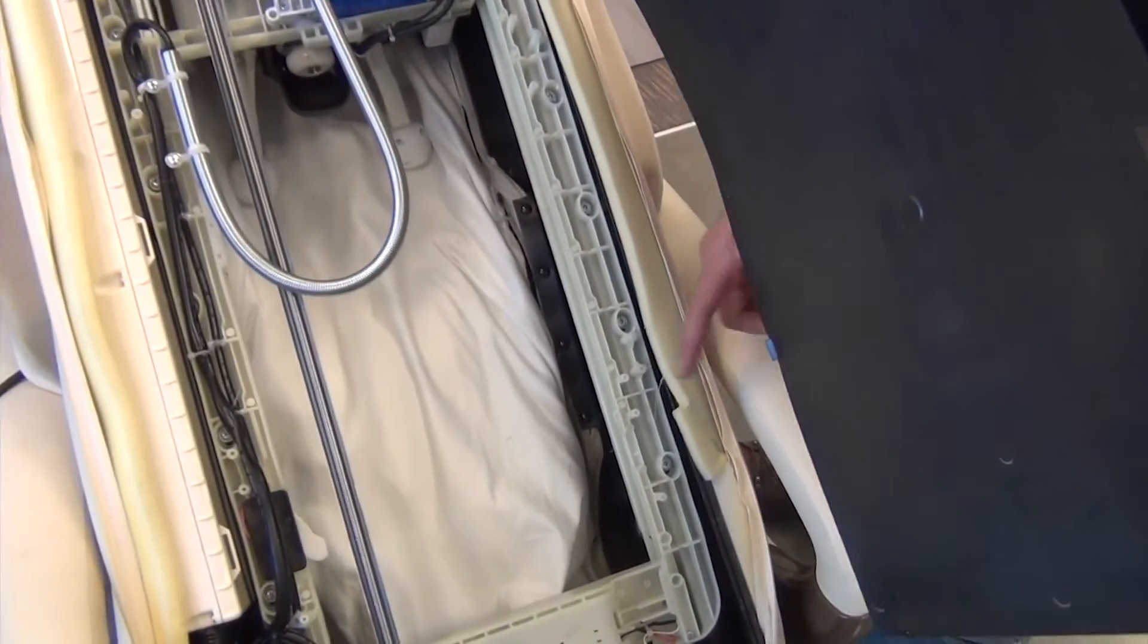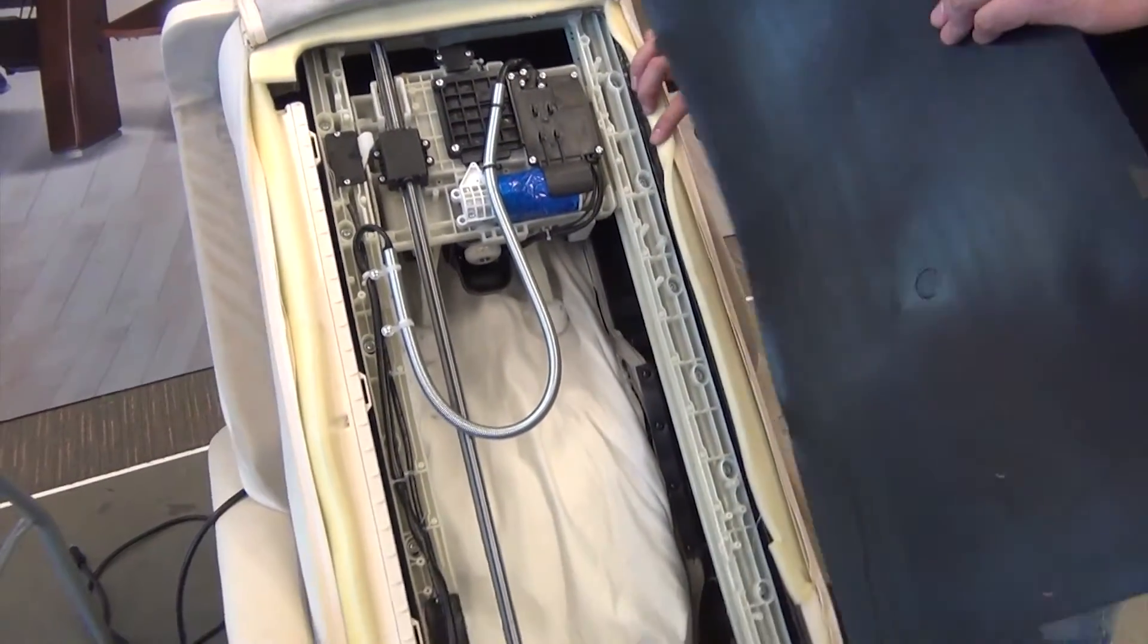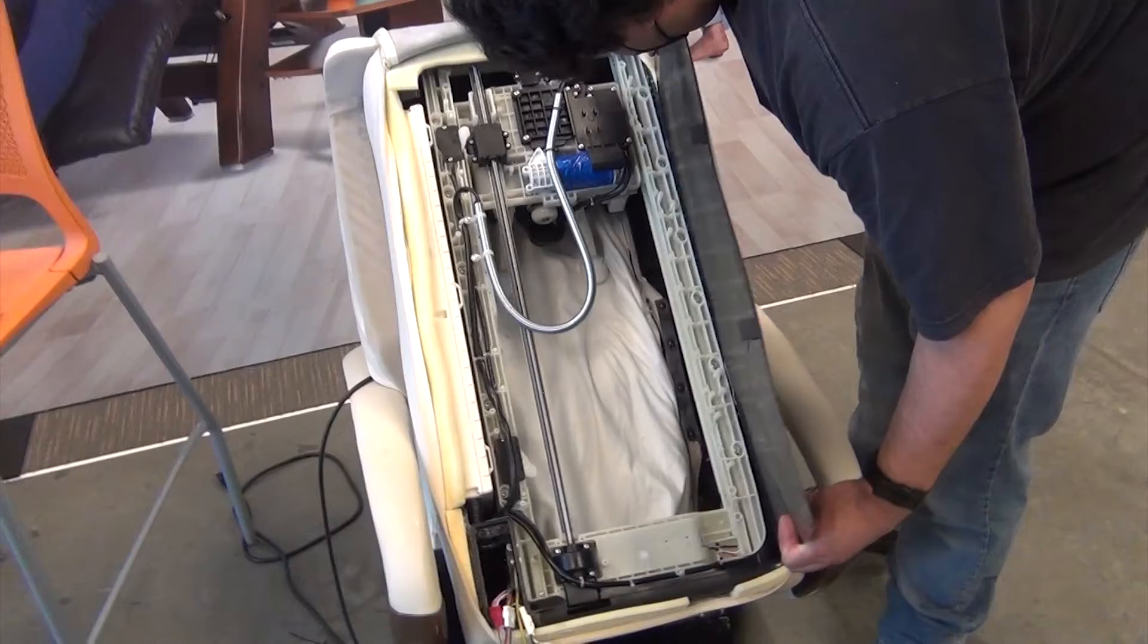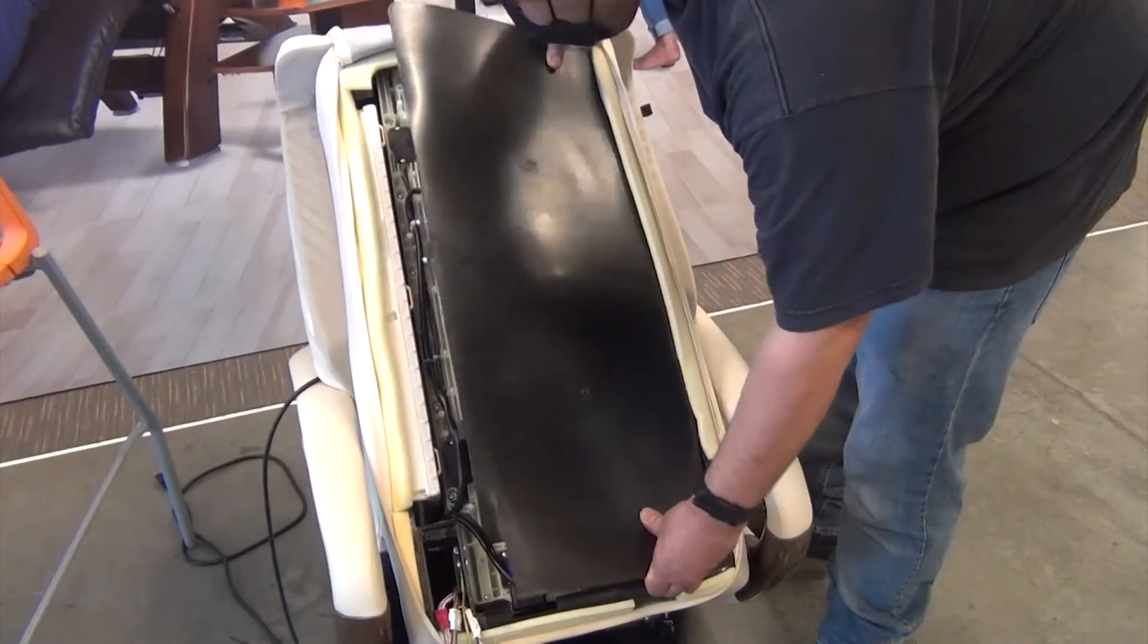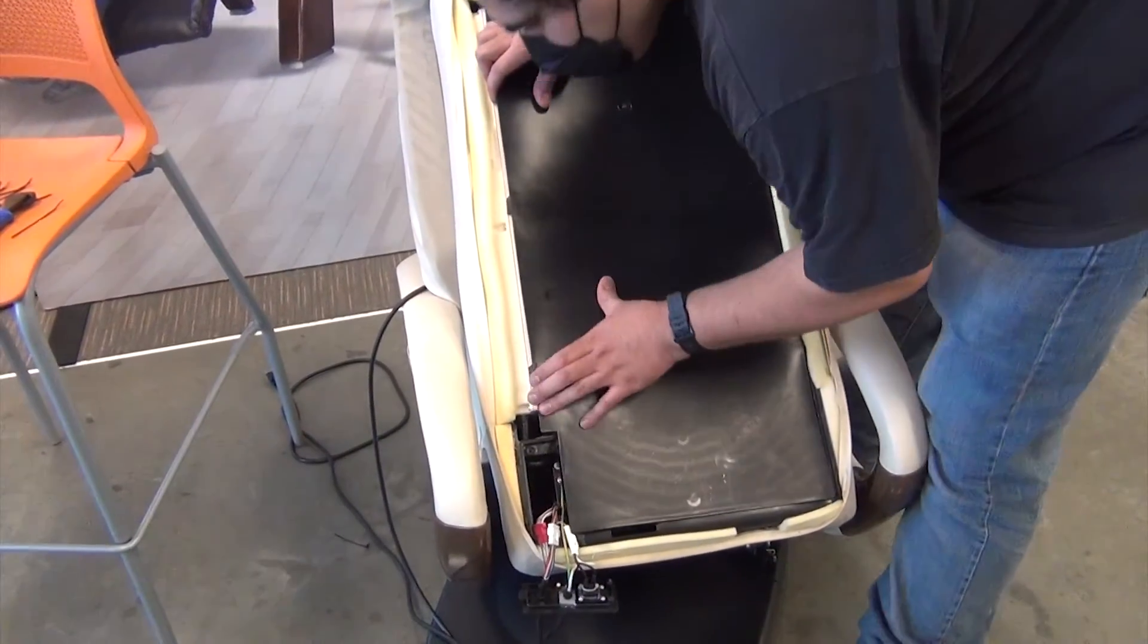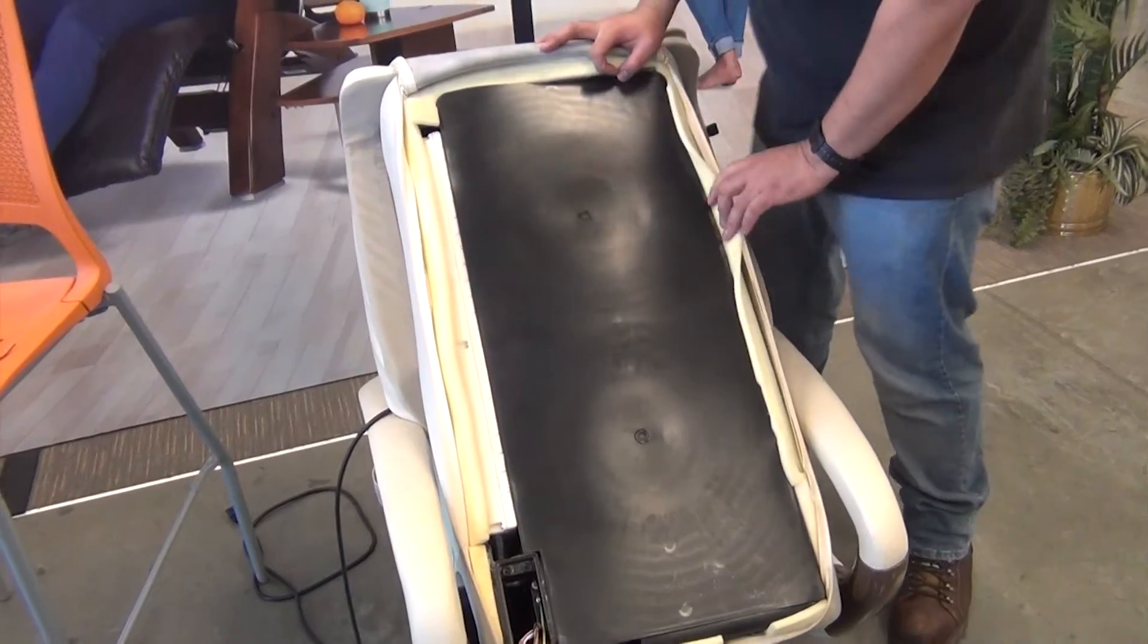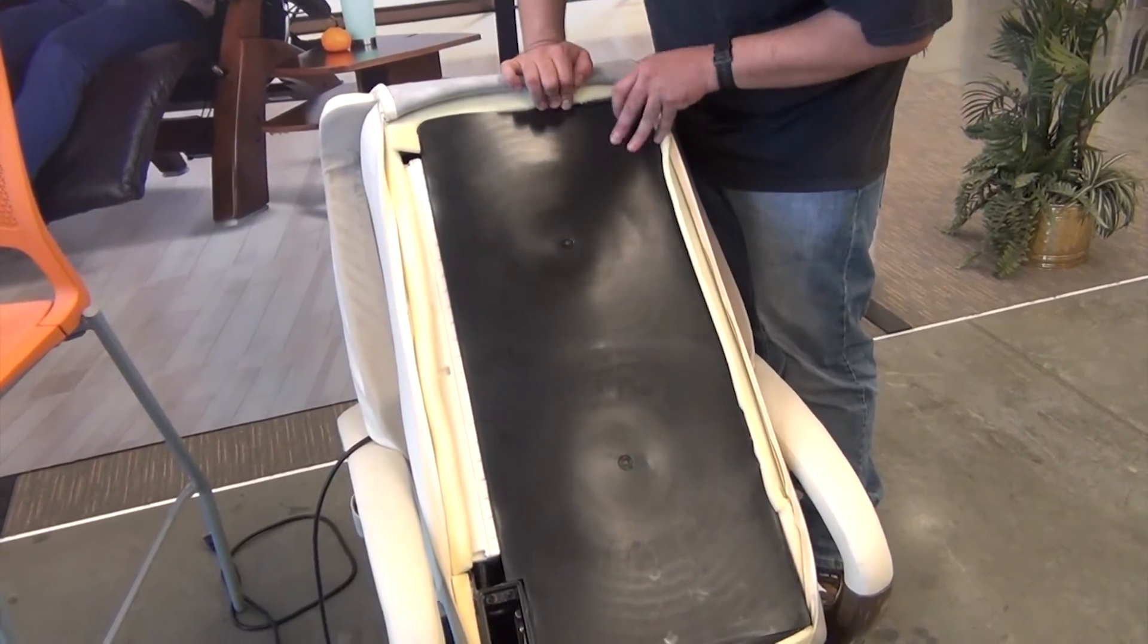Note the tabs along the edge of the black plastic mechanism cover and the corresponding slots on the chair. Insert the right-hand tabs into the slots, lower the cover into position, then insert the left-hand tabs into the slots. Now tuck the upper and lower tabs into their respective slots.